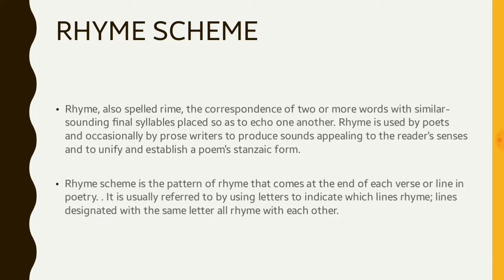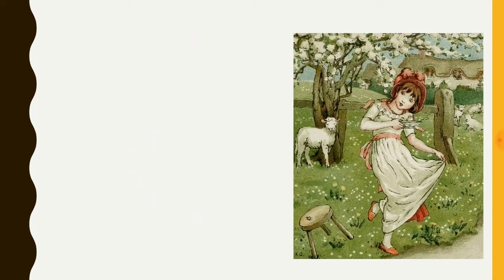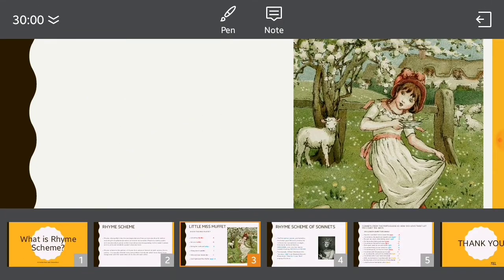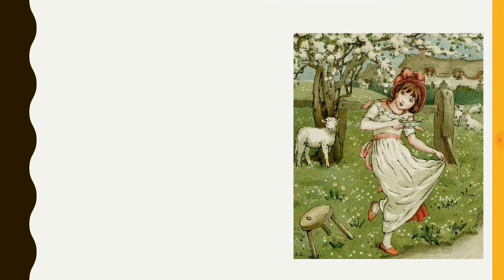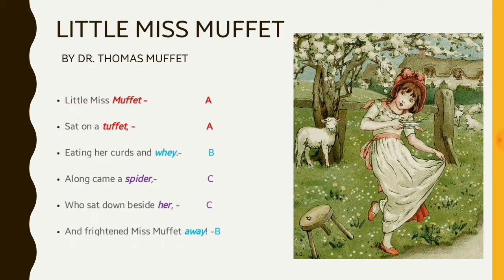So it will be clear if we take an example. For that purpose, I have chosen a very famous nursery rhyme known as Little Miss Muffet written by Dr. Thomas Muffet. So first read this poem. Little Miss Muffet sat on a tuffet, eating her curds and whey. Along came a spider who sat down beside her and frightened Miss Muffet away.